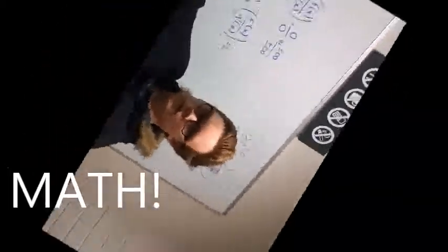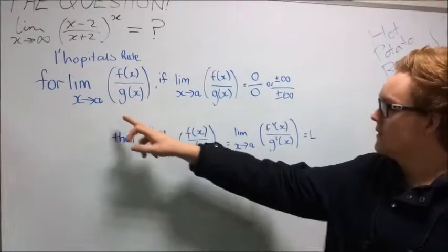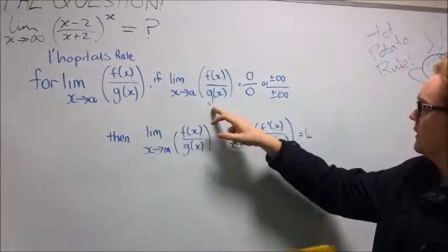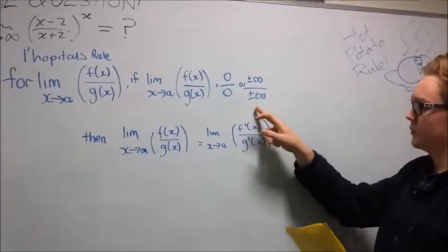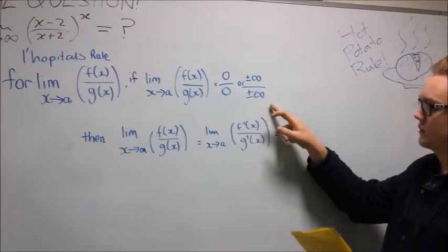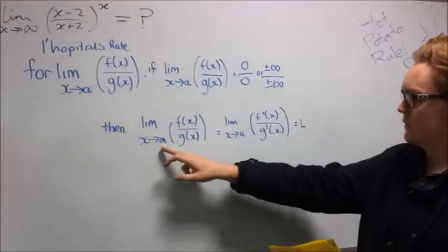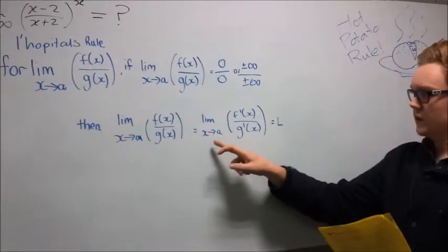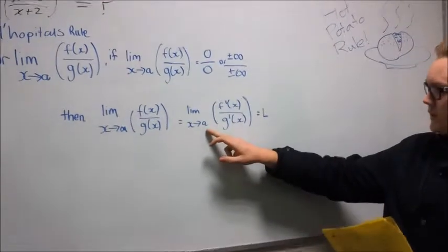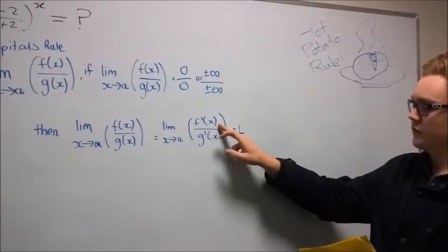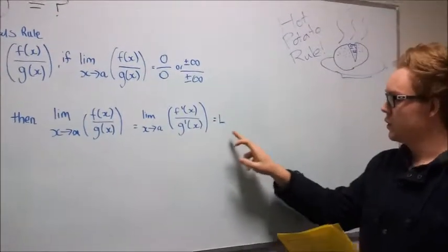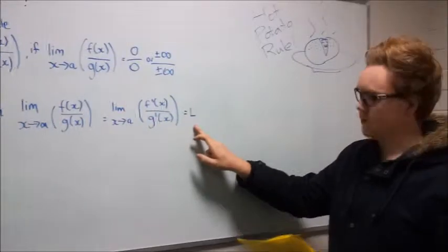Basically, for a limit where x tends towards a, f(x)/g(x), if this limit equals 0/0 or ±∞/±∞, then the limit of x tending towards a of f(x)/g(x) is equal to the limit of x tending towards a of the derivative of both the f(x) function and the g(x) function, which is equal to L, to help us solve the question.